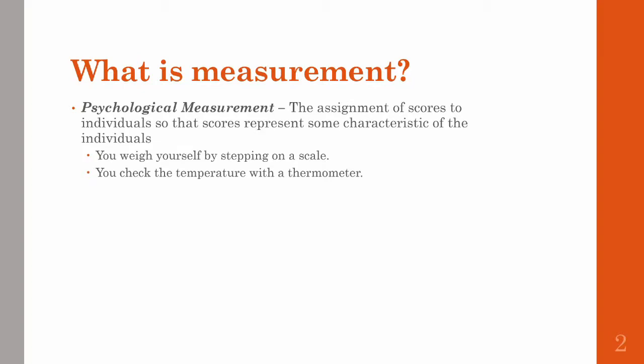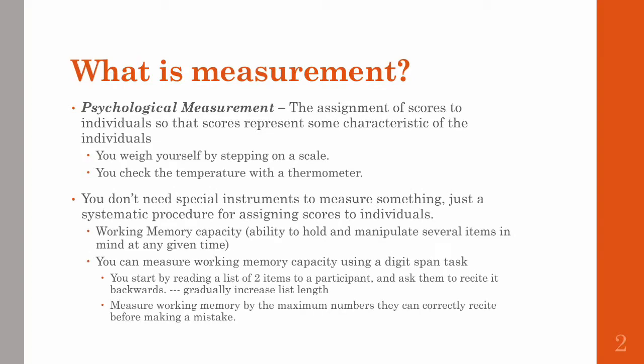Examples of measuring stuff include weighing yourself by stepping on a scale or checking the temperature with a thermometer. You're taking a characteristic and quantifying it or labeling it. You can measure things in different ways, and you don't even need any special tools or instruments to do so. Let's use an example of working memory capacity. Working memory is the ability to hold and manipulate several items in mind at any given time. So how would you measure working memory capacity?